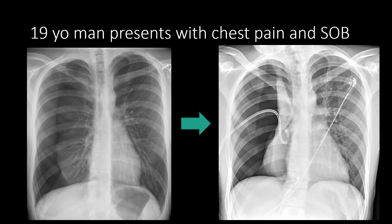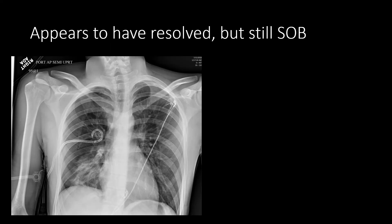A leak was found in the chest tube system, and after the patient was placed on appropriate suction, a repeat chest radiograph showed marked improvement of the pneumothorax. There is maybe a little residual pneumothorax, but it's substantially smaller than it was prior to treatment. Note that this is a semi-upright radiograph, which may underestimate the size of the pneumothorax. The patient has also developed an airspace opacity, which could be related to re-expansion pulmonary edema or residual atelectasis.